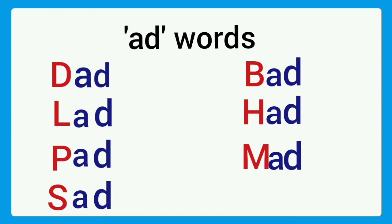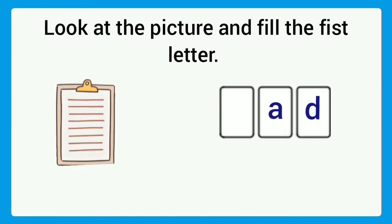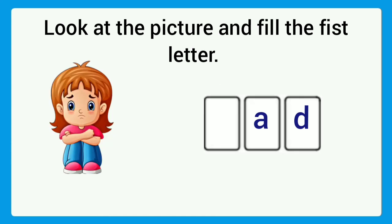Let's do some ad words worksheet. Look at the picture and fill the first letter. Which picture is this one? It is a pad. P-A-D, pad. First letter is P. Write P here. Next, look at the picture and fill the first letter. Which ad word is this one? Sad. S-A-D, sad. Letter is S. Write in the first box.